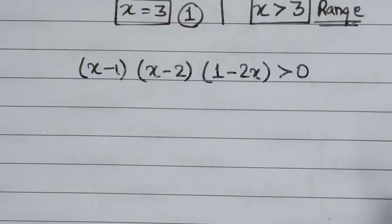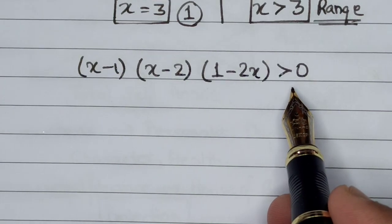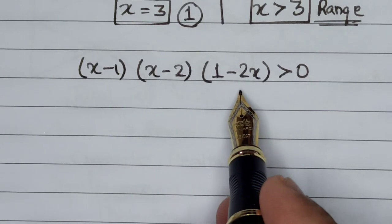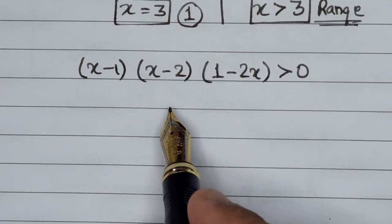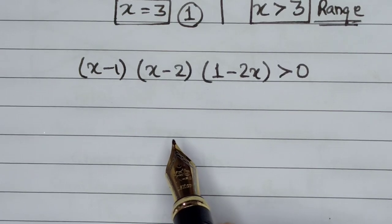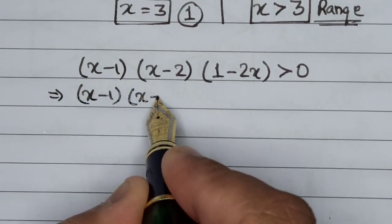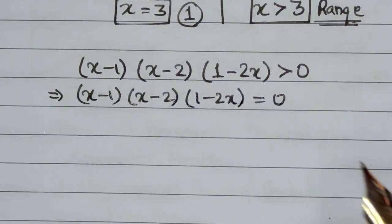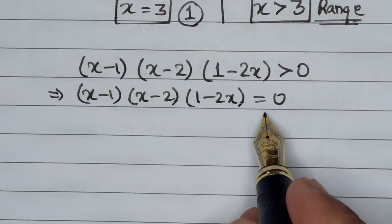Now we begin our journey. The product of three numbers is given which has to be greater than 0 and we have to calculate a common value of x satisfying all three parts. To begin, let us first solve for x to get the terminal numbers on the number line. For this, we substitute the LHS of the inequality equal to 0 — but remember, this is not the final solution; from this step we will only get the terminal points of the number line.